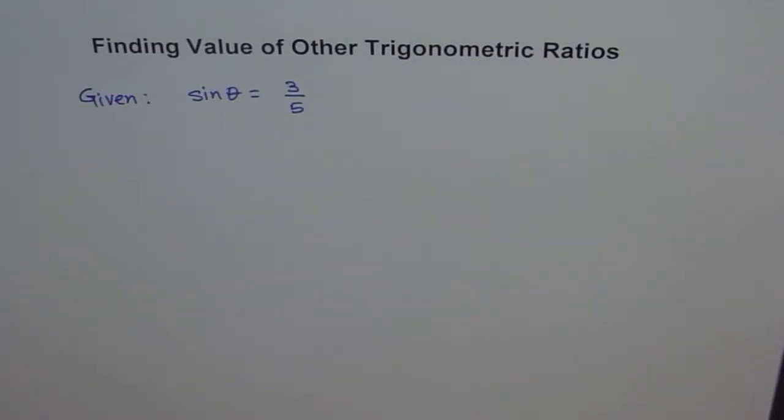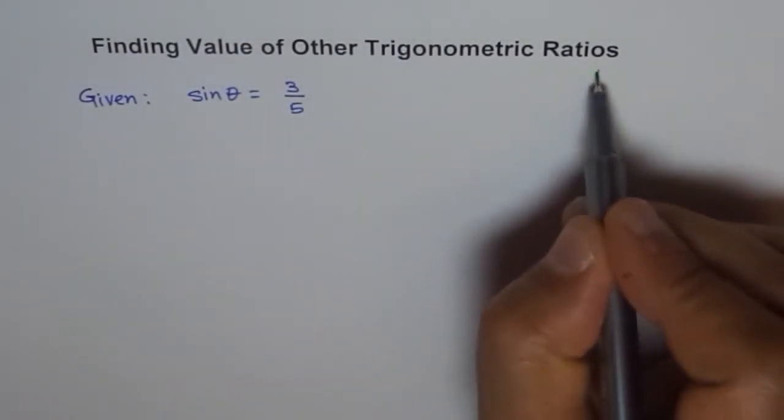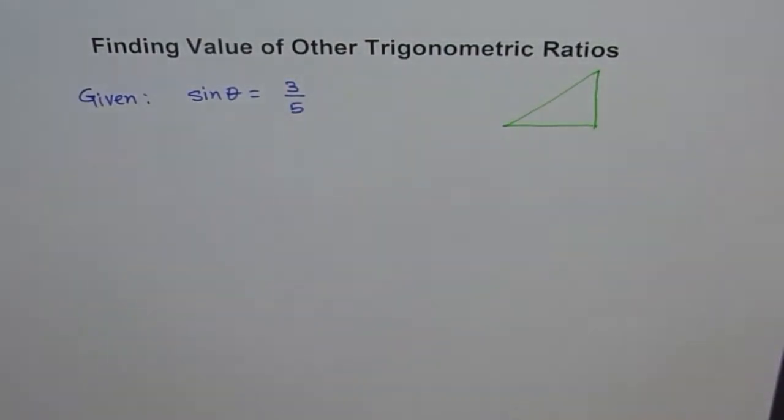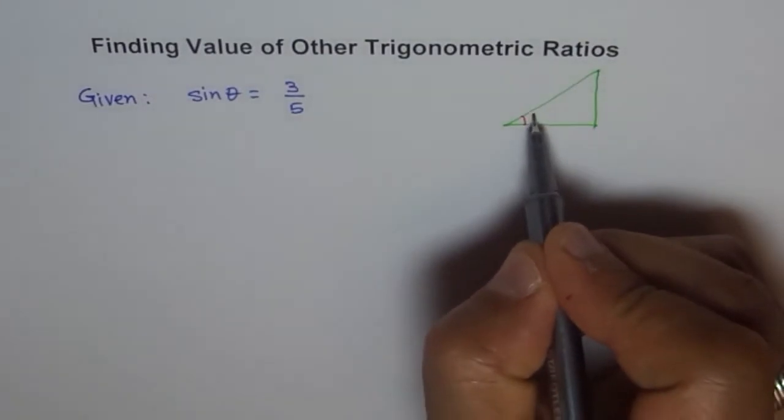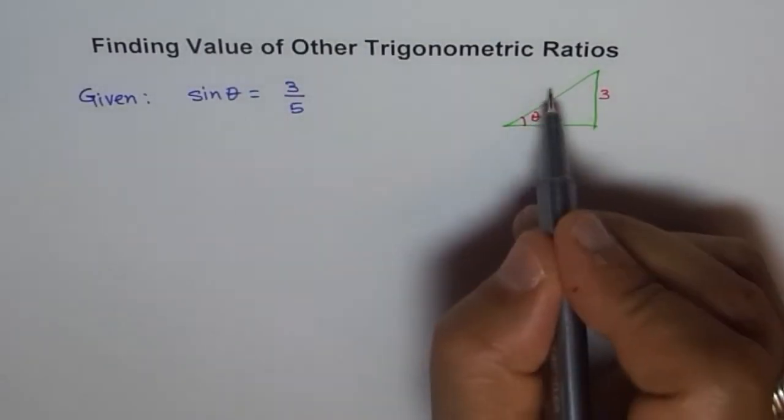Now, if sin theta is given to us as equal to 3 over 5, then what we can do is we can make a right angle triangle. Sin theta means what? Sin theta means that if this angle is theta, then opposite side is 3 and hypotenuse is 5.